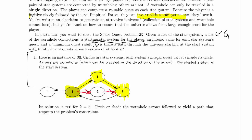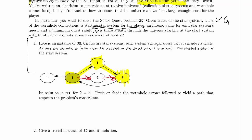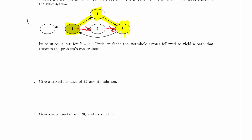Let's go ahead and solve problem 2 as well, because that's also an understanding the problem kind of question. Give a trivial instance of SQ and its solution. What's a trivial instance of SQ? The first thing you should think is, I'll have the graph be empty. But remember, you have to have a start star system. So there's got to be a shaded node.